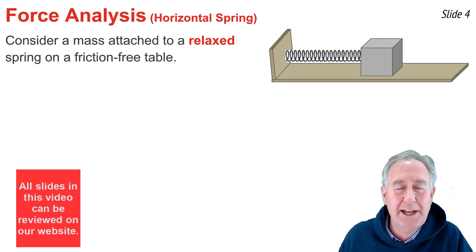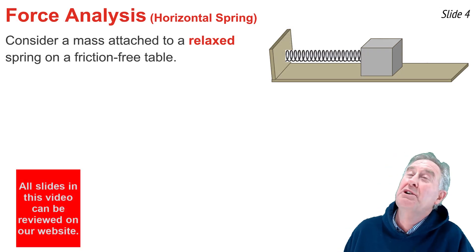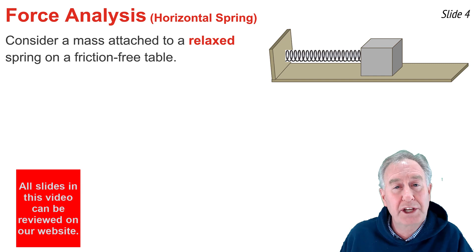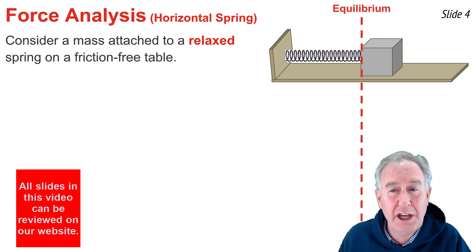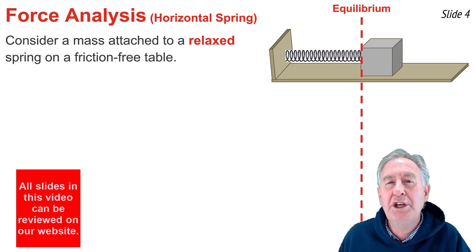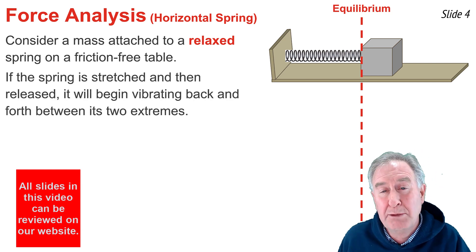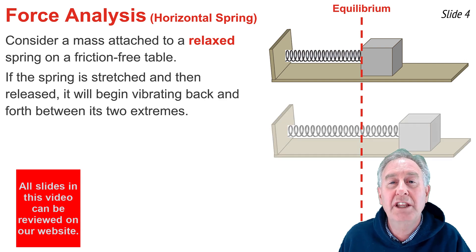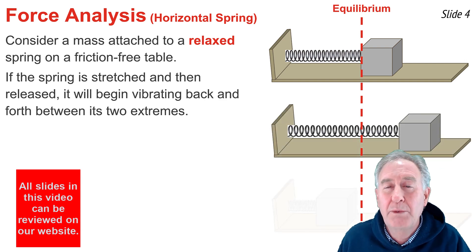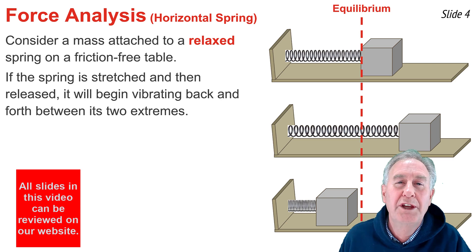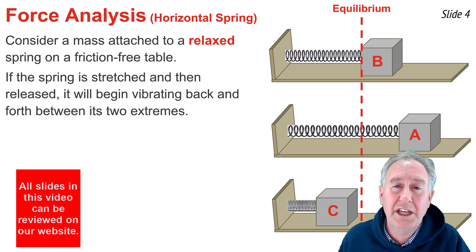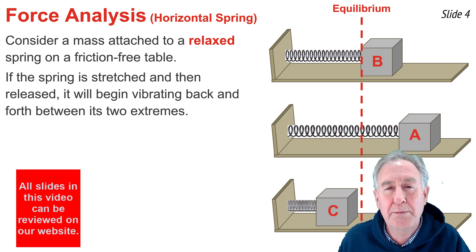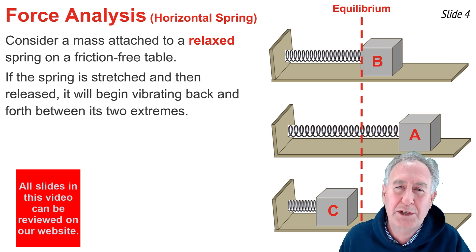Suppose we have a mass attached to a horizontal spring placed on a friction-free table. If the spring is in its relaxed state, we call the position of the mass the equilibrium position. If we stretch the spring by pulling the mass back to the right and release the mass from rest, we would observe the mass begin vibrating back and forth between its two extremes. We'll call these three positions A, B, and C, where A and C are the two extreme positions and B is the equilibrium position.